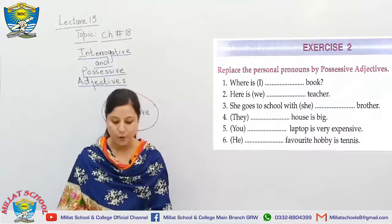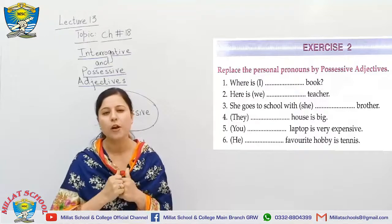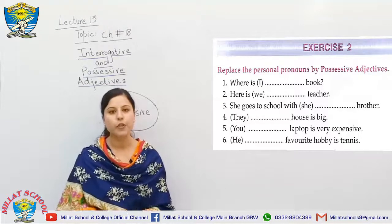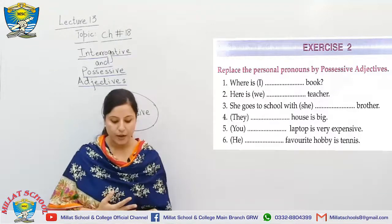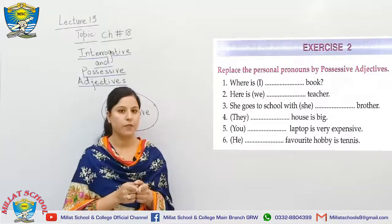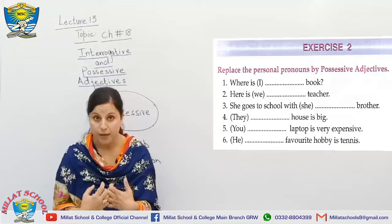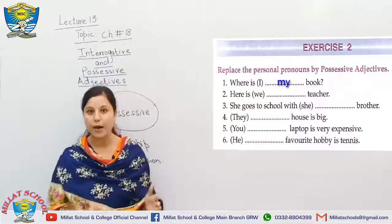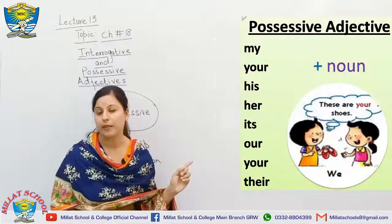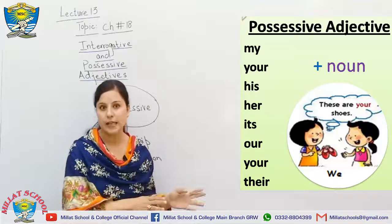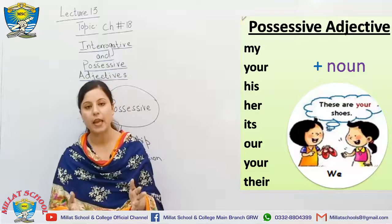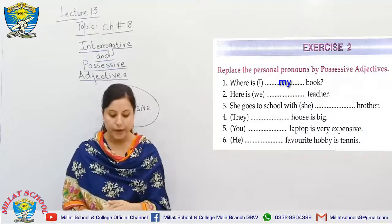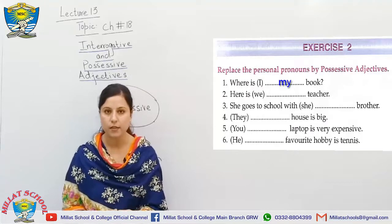In exercise two, a pronoun is given in the bracket and you have to change it to show possession. For example: '___ book' with pronoun 'I' — change it to 'Where is my book?' 'I' becomes 'my.' Don't forget to see the table I shared for personal pronouns to understand first, second person, singular and plural, and how to use them.